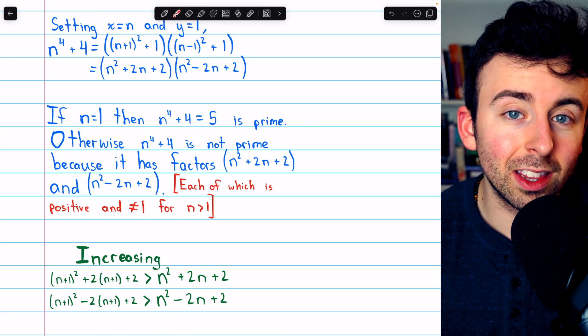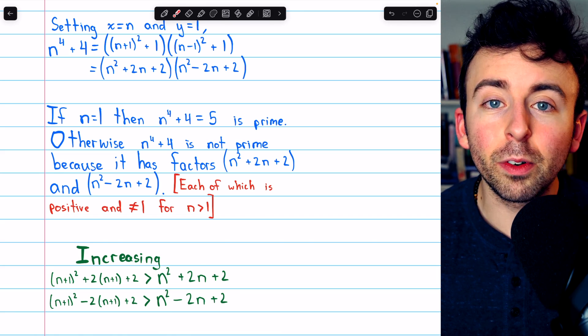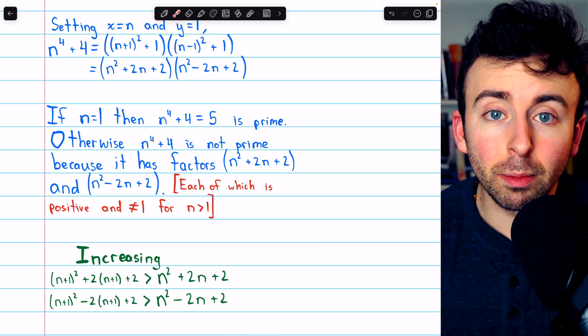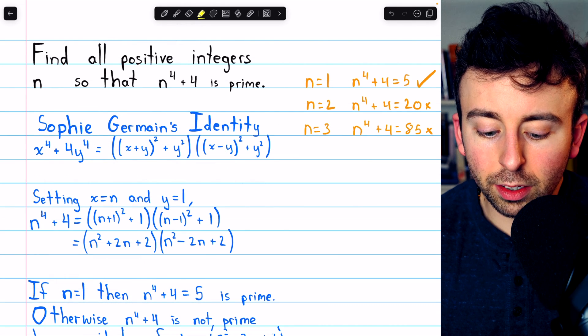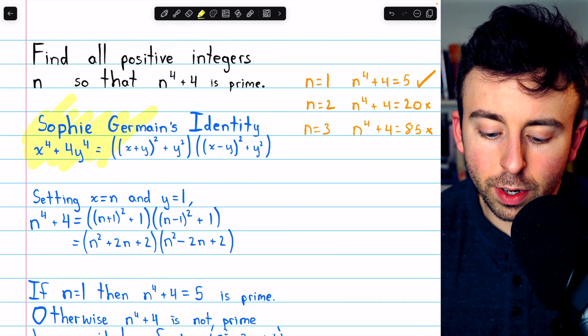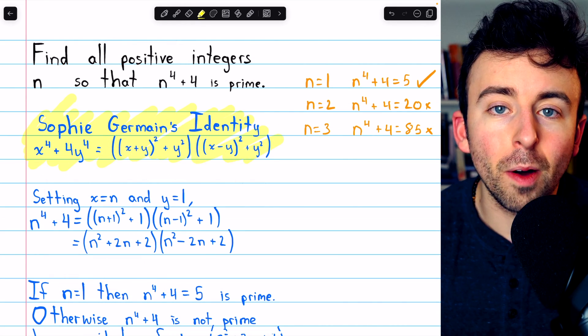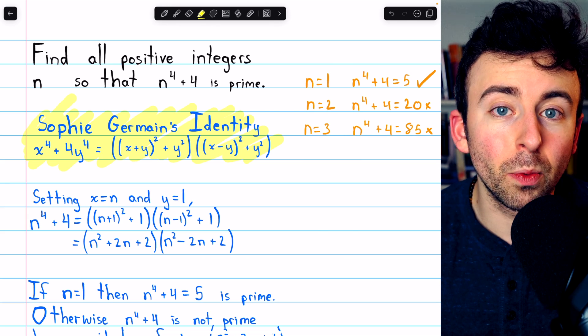So after n equals 1, they're both just going to go up and up and up for each value of n. Clearly, it demonstrates that this expression will be composite. And that's how we solve this problem using Sophie Germain's identity, which is a pretty common character in math competition problems, so it might be worth remembering.